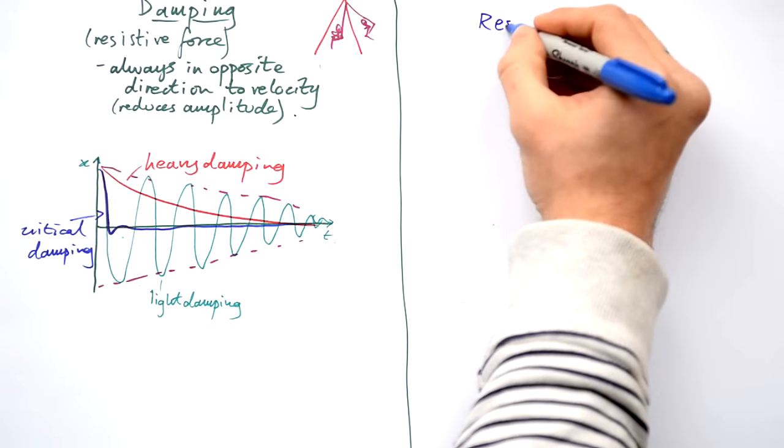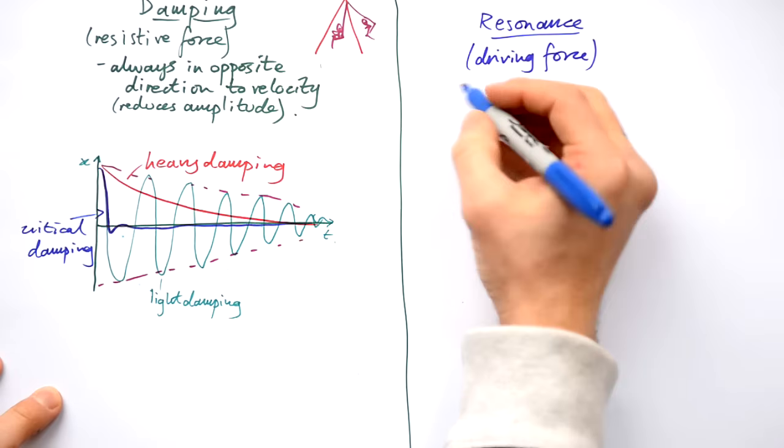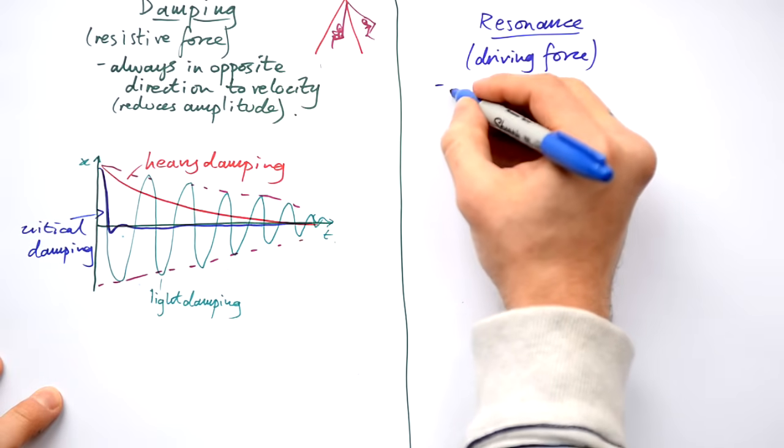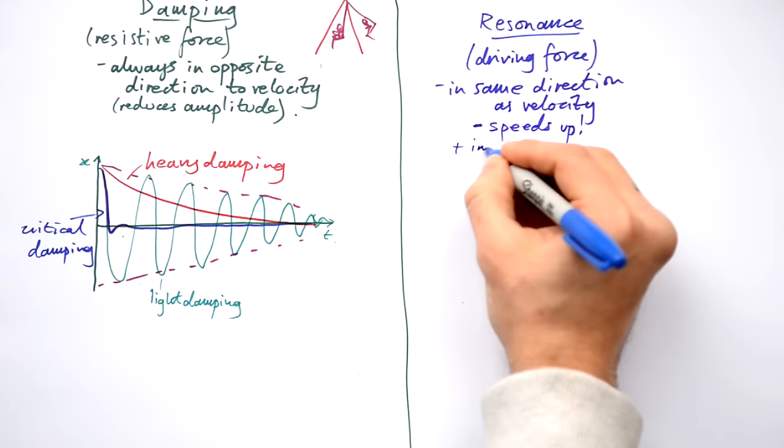What's the opposite of that? Instead of having a resistive force we have a driving force. This is a force that is in the same direction as velocity. What does it do? Speeds it up and it increases the amplitude.